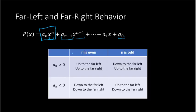In this table, we have what's going to happen. First off, if n is even — say it's like something to the 2nd power, 4th power, 6th power, etc. — what we know is that the far left and the far right will be doing the same thing: either it's both going up, or it's both going down. How do you know which? We know that based off the coefficient. If a sub n, the leading coefficient, is bigger than 0 — meaning it's positive — it's facing upwards. If it's negative, then they're both going down.